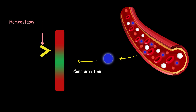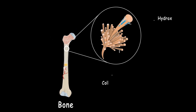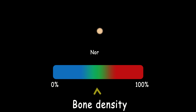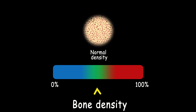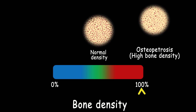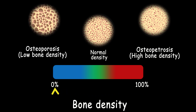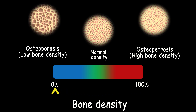If something happens and this system can't maintain this balance, we are going to have problems. If you look at the bone tissue, which is mostly made of collagen matrix and hydroxyapatite, the density of the bone should be in a specific range. If it goes higher, we call this osteopetrosis or stone bone disease. And if it goes lower than the balance concentration, it would be osteoporosis or brittle bones.